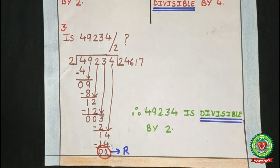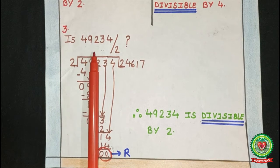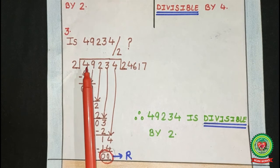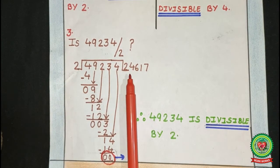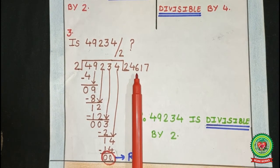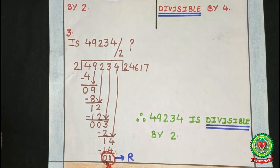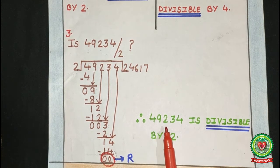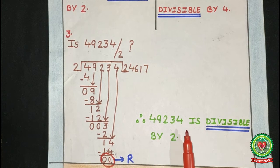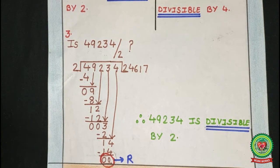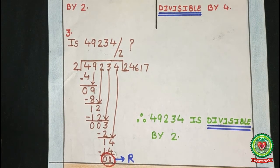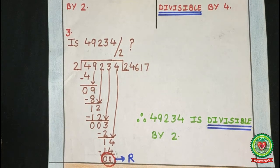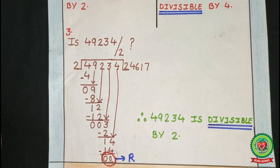Let us understand with one more example. Is 49,234 divisible by 2? When we divide 49,234 by 2, the quotient here is 24,617 and the remainder is 0. Therefore, 49,234 is divisible by 2. Here we have observed that when bigger numbers are divided, it takes a lot of time to find whether a number is divisible by another number or not. So there are some rules that help us determine divisibility without performing actual division.